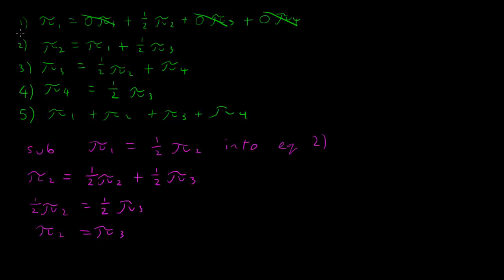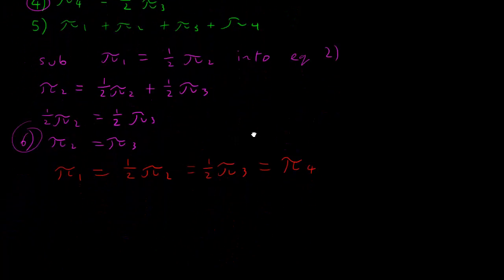Now, using equation 1, using our new equation which I'm now going to call 6, and our equation 4, we can do the following. We can write out that pi 1 is equal to, using equation 1, half pi 2. Now, using equation 6, we know that pi 2 is equal to pi 3, so half pi 2 is equal to half pi 3. And we can see that half pi 3 is equal to pi 4, using equation 4.